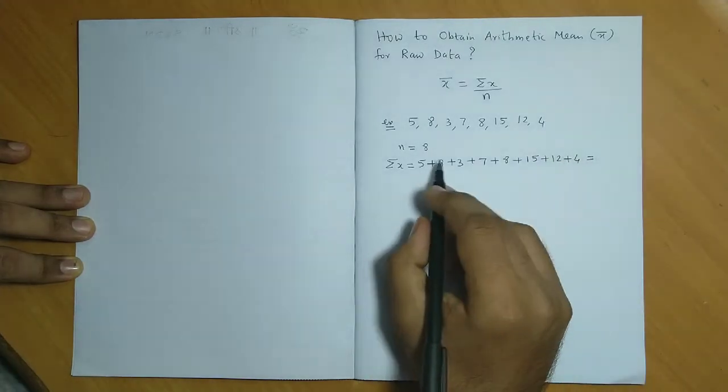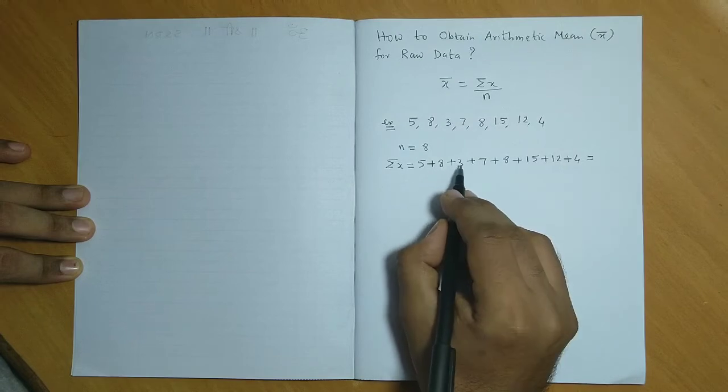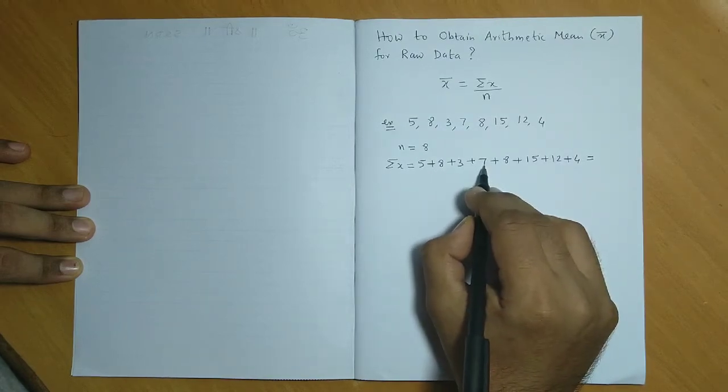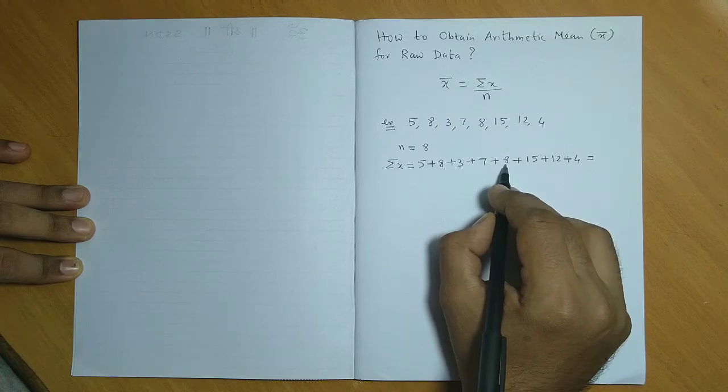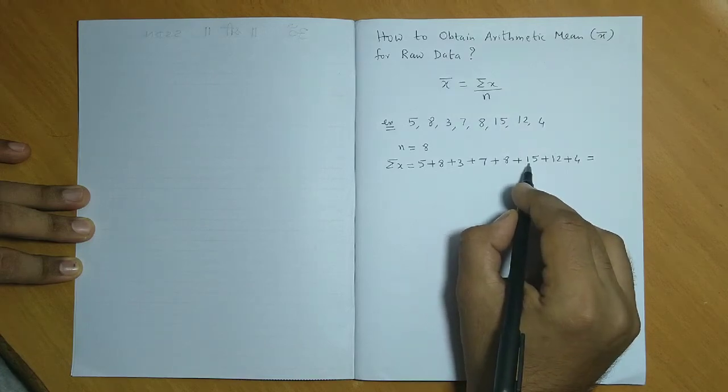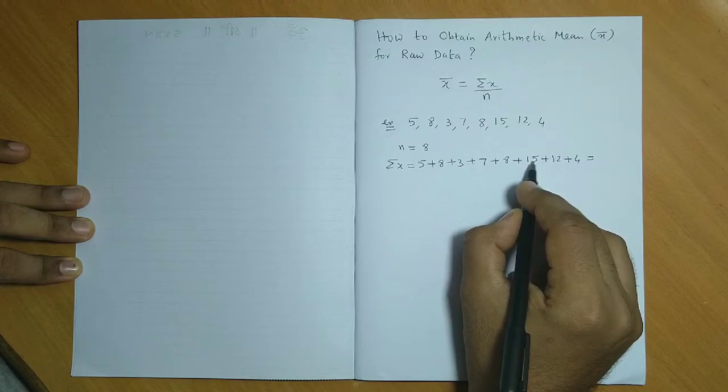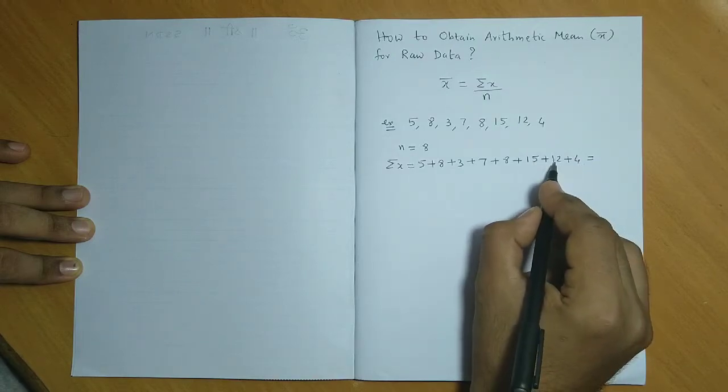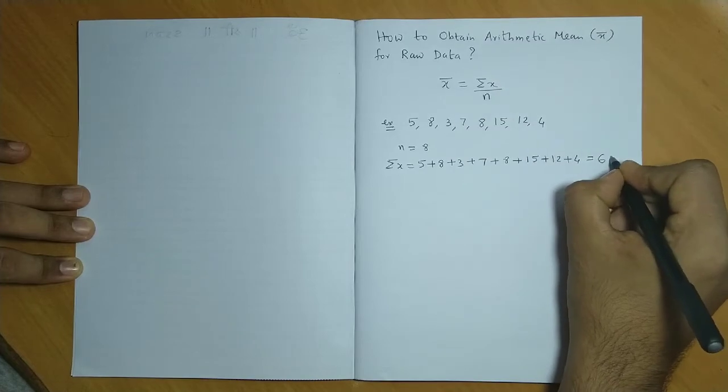Let us do the addition. This is 13 and 3, that is 16 and 7, 23. 23 and 8 is 31. 31 and 15 is 46. 46 and 4 is 50 and 12. So that total is 62.